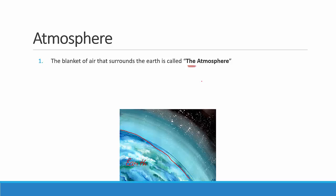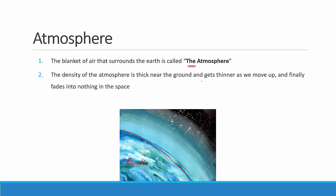Secondly, we look at the density of the atmosphere. Density is nothing but thickness. When we talk about density of the atmosphere, the atmosphere is said to be thick near the ground, near the surface of the earth, and it gets thinner as we move upwards. You can see in this picture near the earth's surface it's very thick and opaque, whereas as we move upwards it becomes thinner and finally disappears into nothing at space.